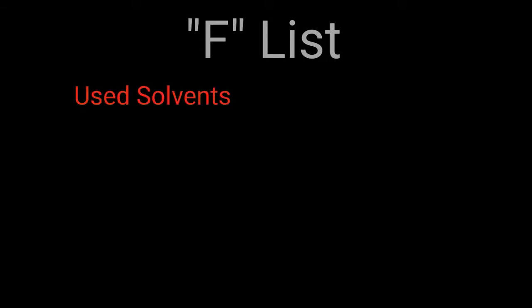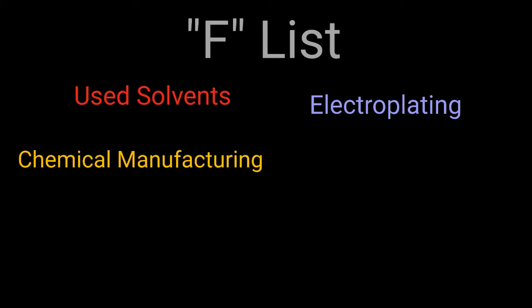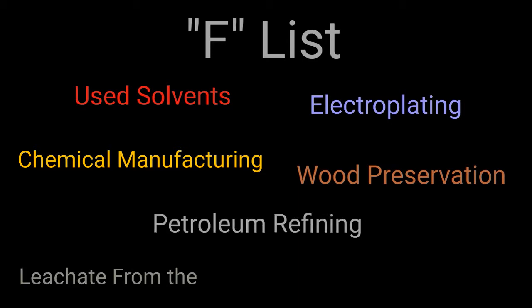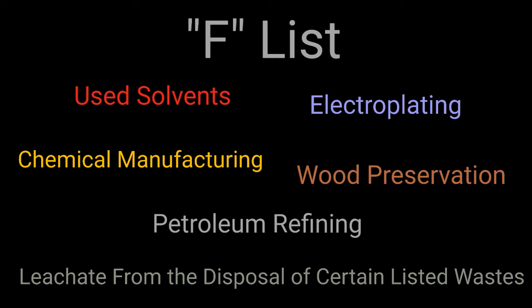Some F listed wastes are what we would call electroplating or chemical metalworking wastes. Third, chemical manufacturing. Fourth, wood preservation. Fifth, petroleum refining. And lastly, leachate from the disposal of certain listed wastes.